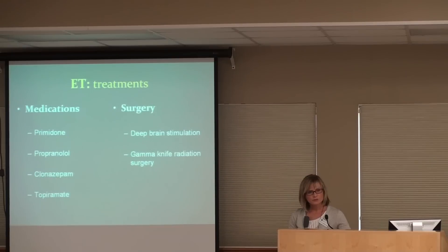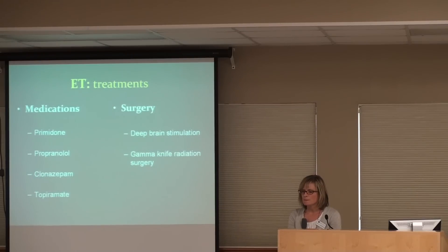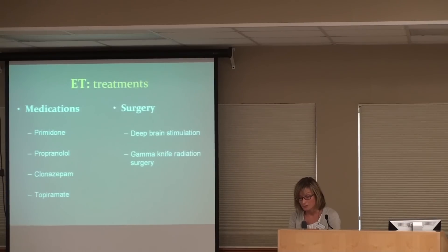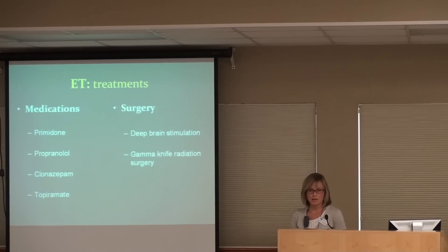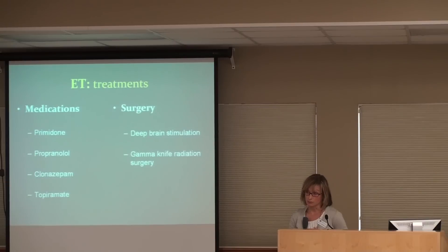Essential tremor is a very treatable condition, which is important to know. There are two main types of treatments. There's no cure for it, but there are a number of medications that help some people. The medicines don't help everyone. The main medicines that are effective are: primidone, propranolol, clonazepam, and topiramate. Primidone and topiramate are both actually anti-seizure medications that work on the brain, but we use them to effectively treat essential tremor in some patients.